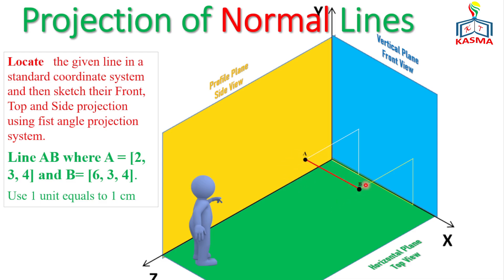We have located the given line on the coordinate system. Now let's project the front, top, and side views. For the front view, the line is projected to a point. For the top view, we project these lines — the height in the Y direction from point A and point B is projected. The heights are equal to 3 cm when seen from this direction.